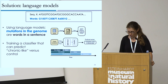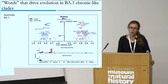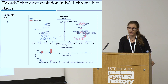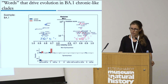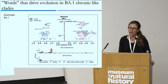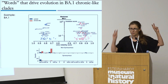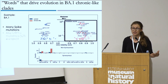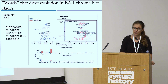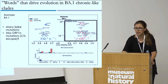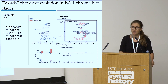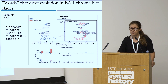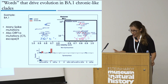There is a lot of complexity here, but what we were able to do is find the words — these are the mutations — that drive evolution in the different chronic-like clades. This is just one example for BA1: the mutations shown on the right are those that presumably drove the chronic-like state in BA1 infections. We see many spike mutations as expected, and interestingly we also see quite a lot of ORF1A mutations, which we think have to do with T cell escape — cytotoxic T cell escape — a line of evidence we are currently following up on.